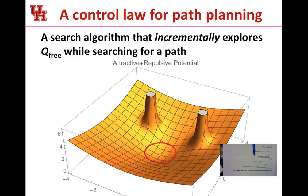Previously we saw that it is difficult to construct the obstacles in the configuration space, and it requires a lot of memory. Although we came up with breadth-first search, which tells us the shortest path given a map of obstacles in the configuration space, that's often very difficult to do. So we'd like to come up with a search algorithm that can incrementally explore the free space while searching for a path to the goal.